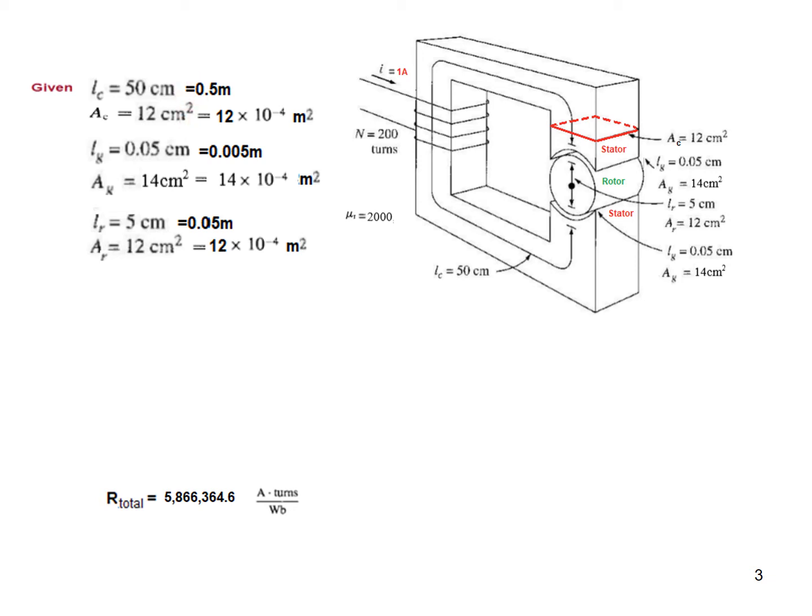So these parameters I have grouped together: the stator part dimensions and area of cross-section, the air gap dimensions, and the rotor dimensions. This is the equivalent circuit, so all we need to do is find all the four reluctances.